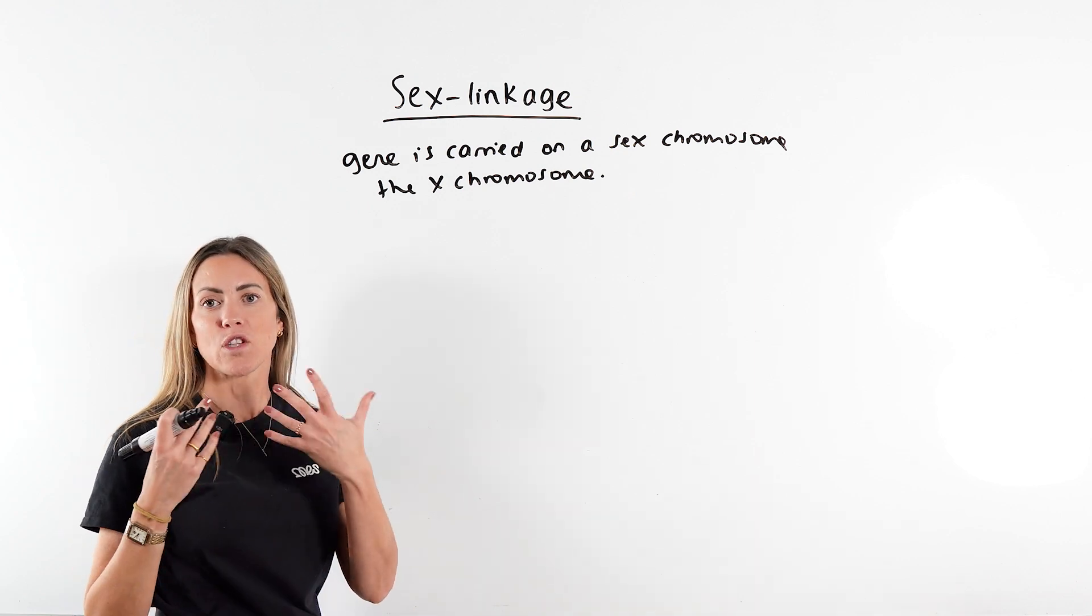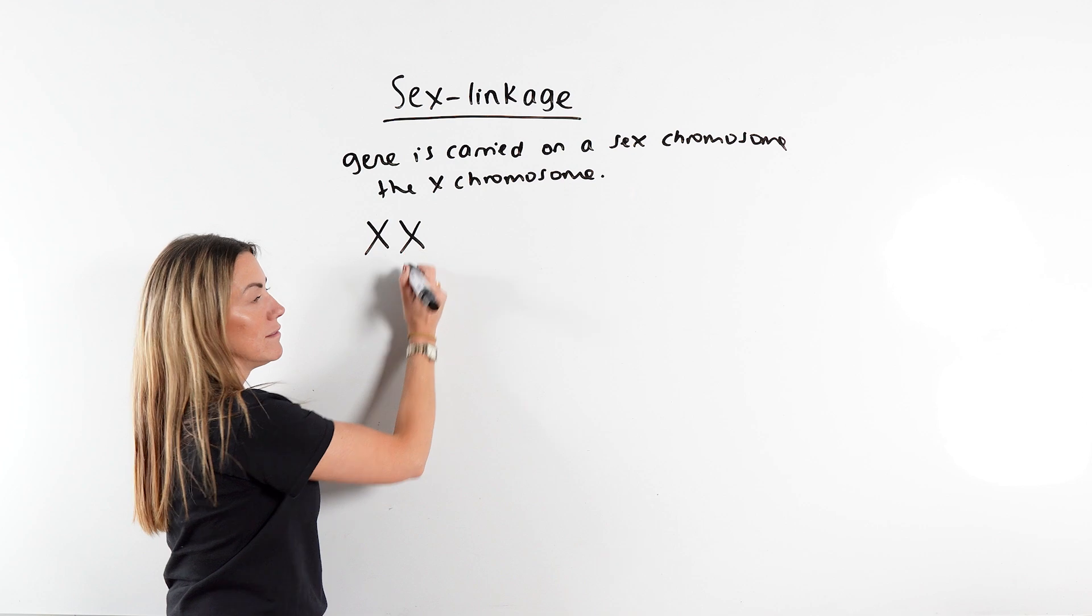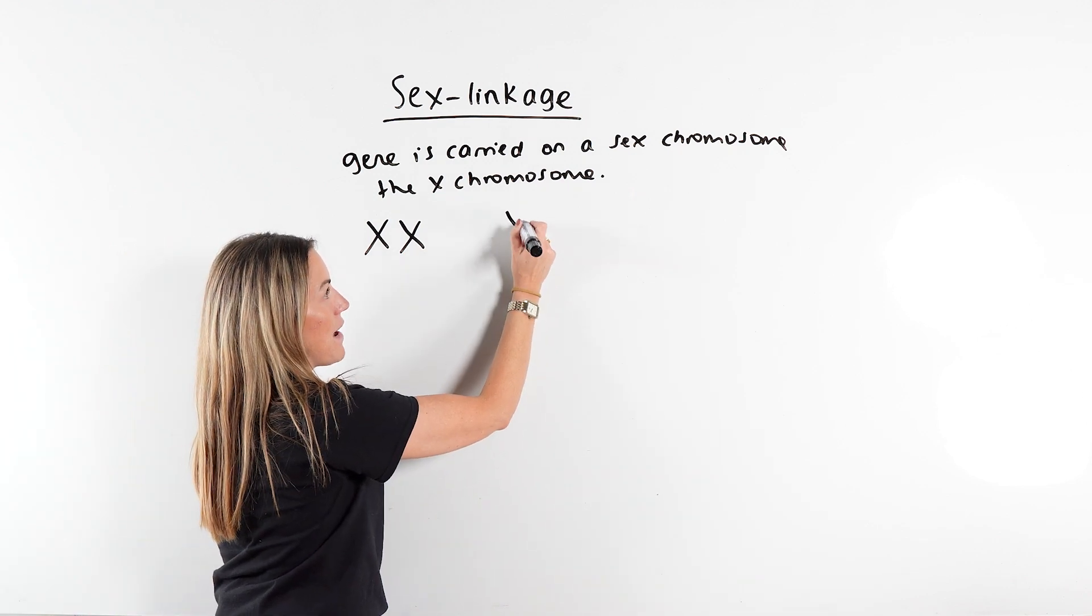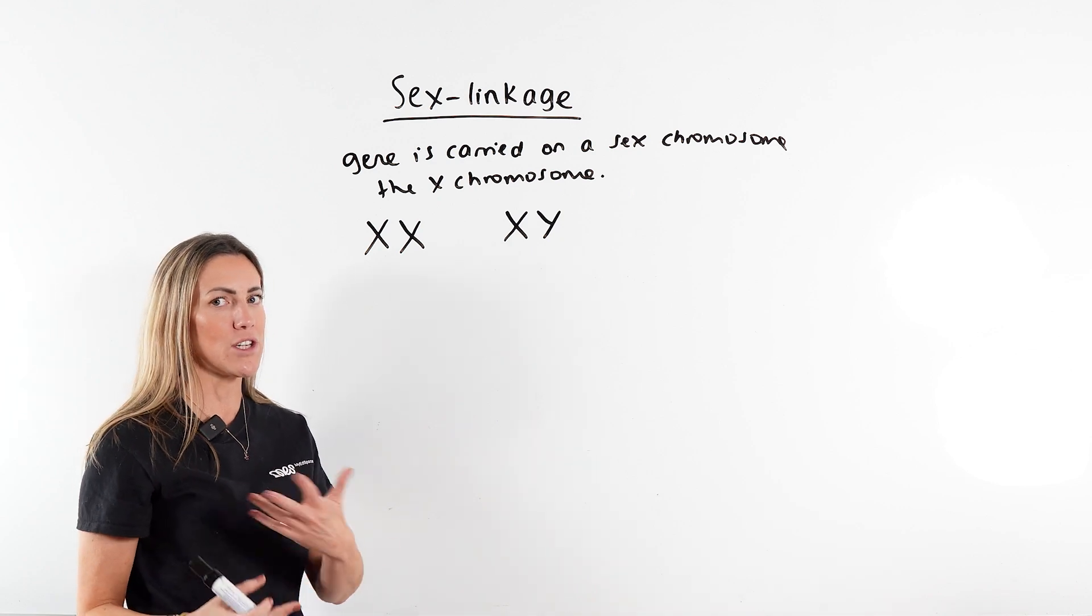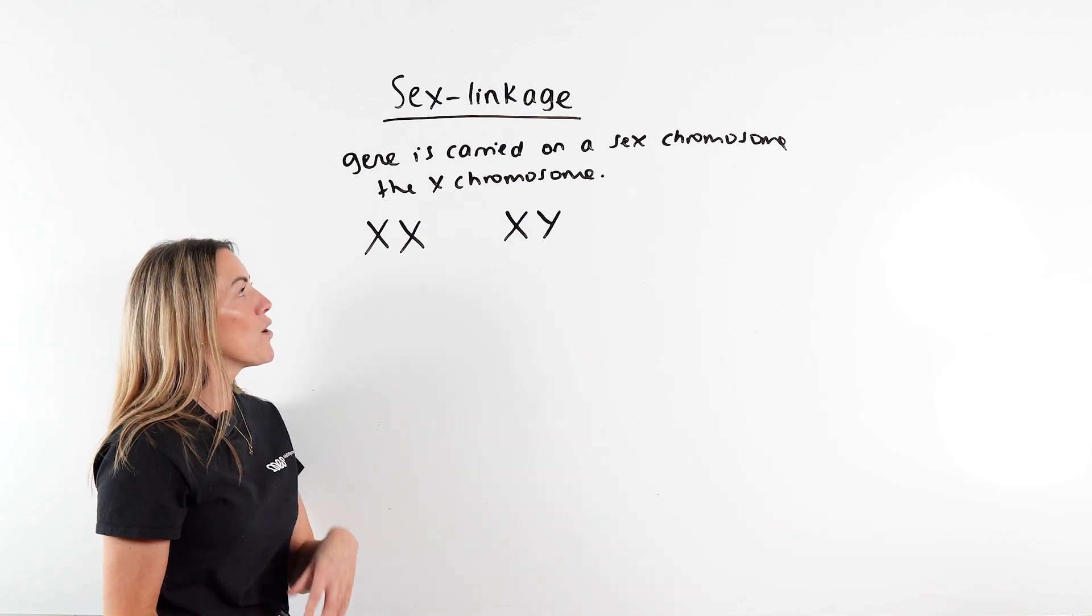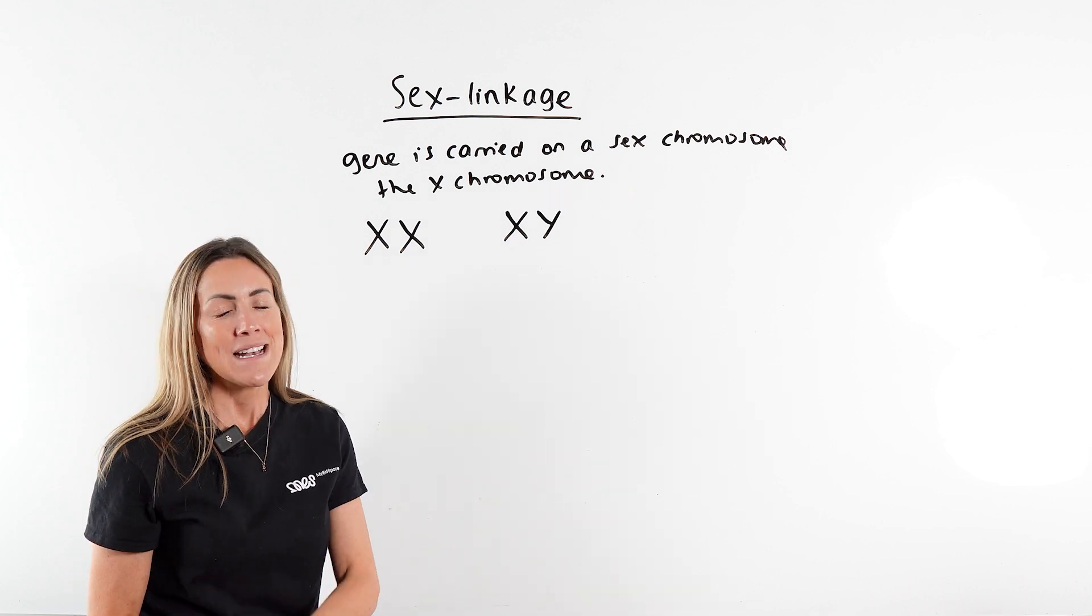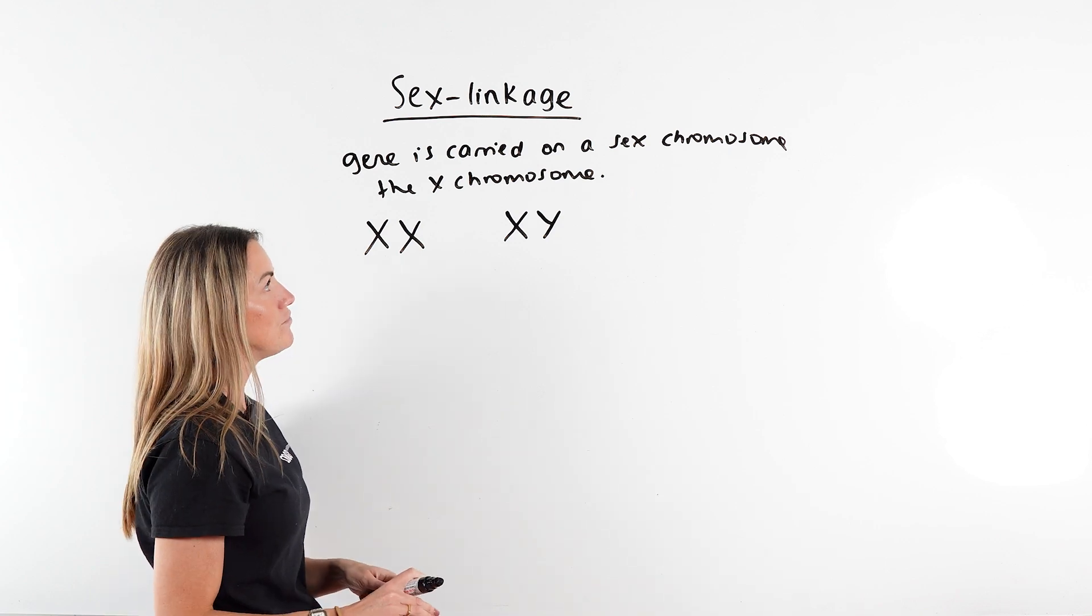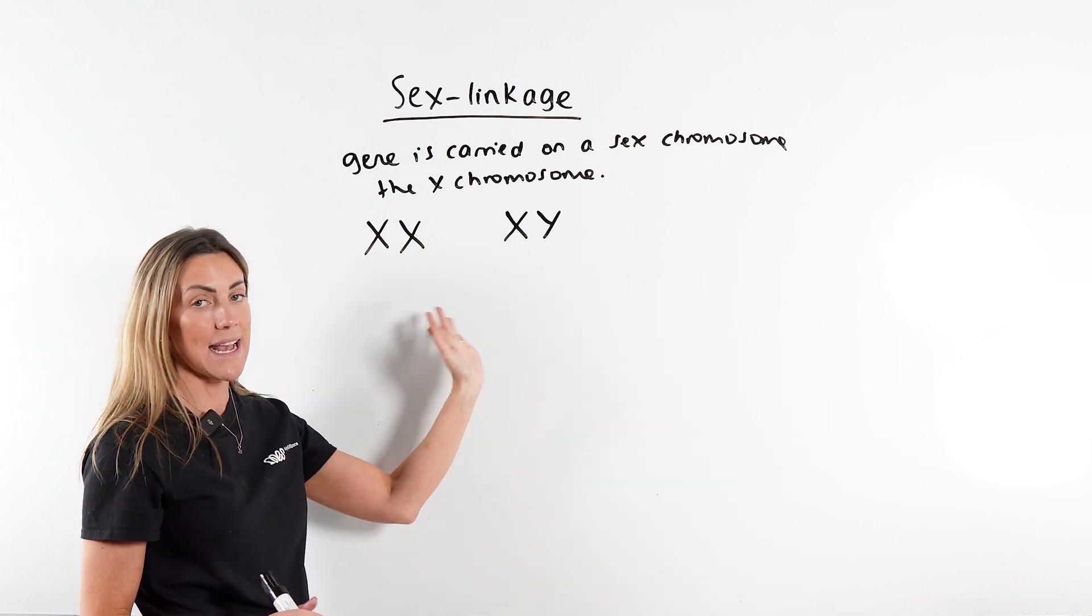Now remember, the sex chromosomes are the 23rd pair of chromosomes. Females, well in humans and most animals anyway, females are XX, males are XY. But do check the question, because I've seen AQA trying to trip you up, where they give you a species where the male is XX and the female is XY. But let's not overcomplicate it today. Just look out for that in your exams. So females have two X chromosomes, males have an X and a Y chromosome.